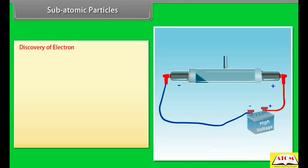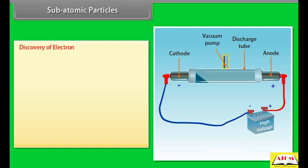Subatomic particles: Discovery of electron. A discharge tube is a long glass tube fitted with metal electrodes on either end across which high voltage can be applied. The tube is also connected to a vacuum pump for controlling the pressure of gas inside. The discharge tube has a coating of phosphorescent material behind the anode.